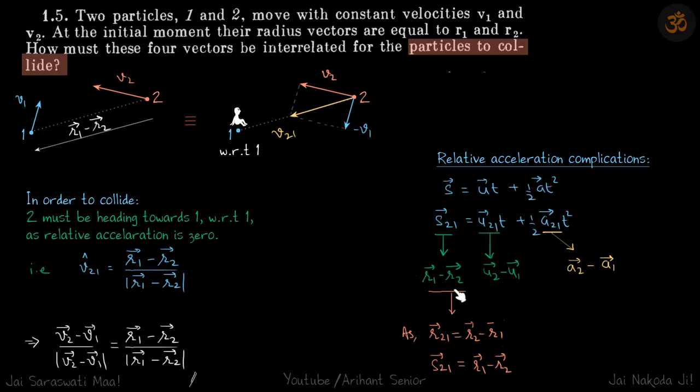So s₂₁ = r₁ - r₂ and u₂₁ = u₂ - u₁. Now a₂₁ means a₂ - a₁, right?